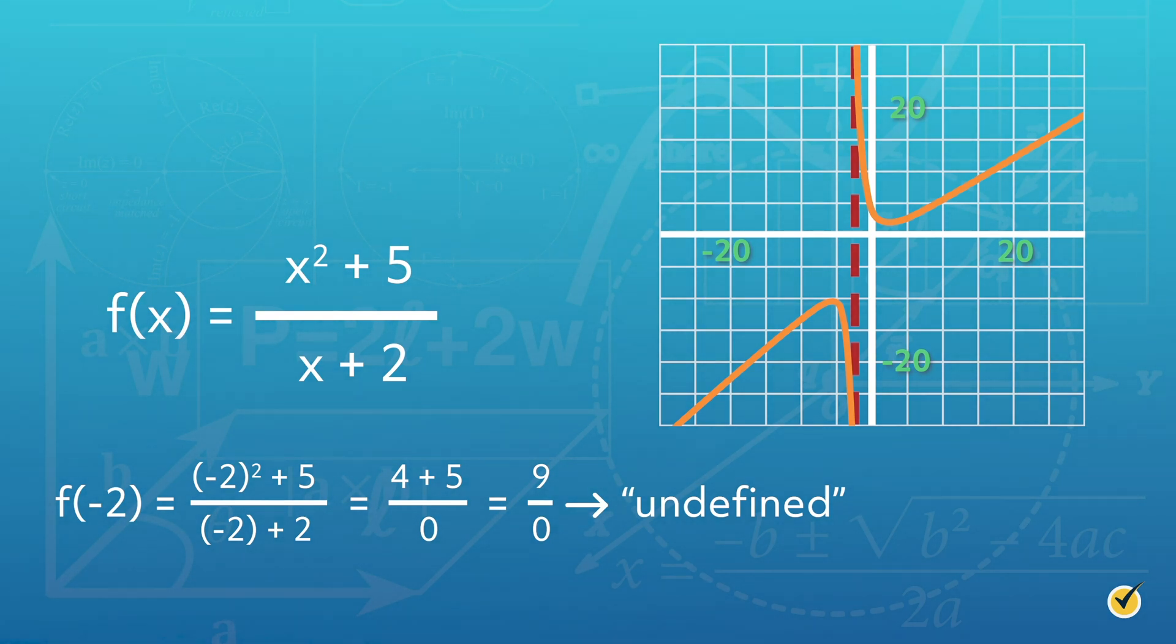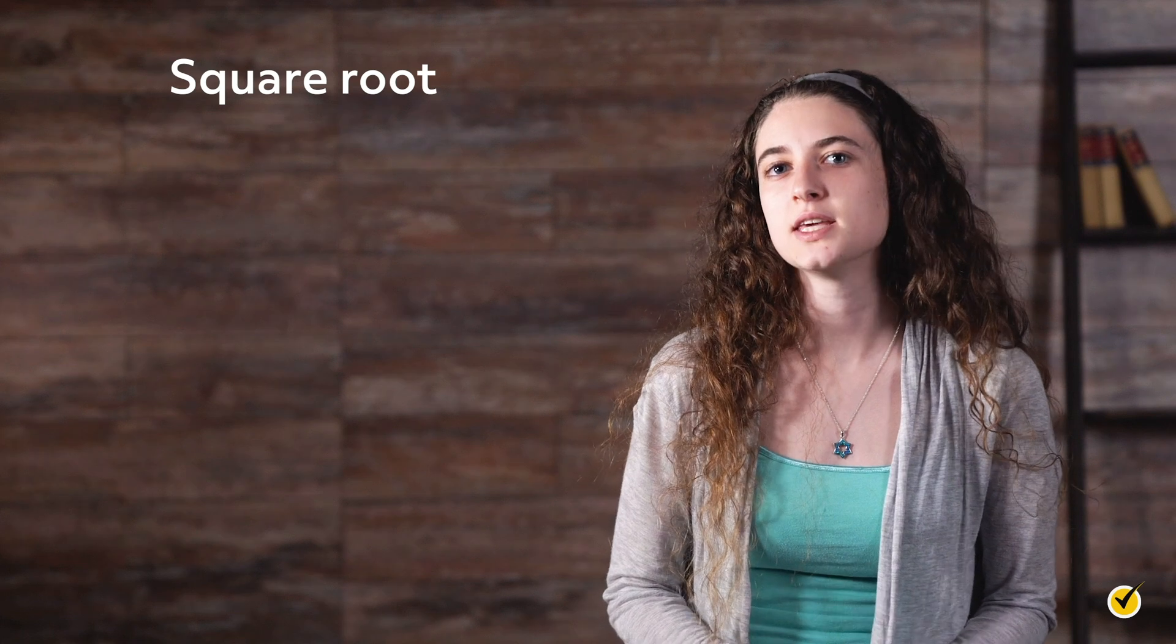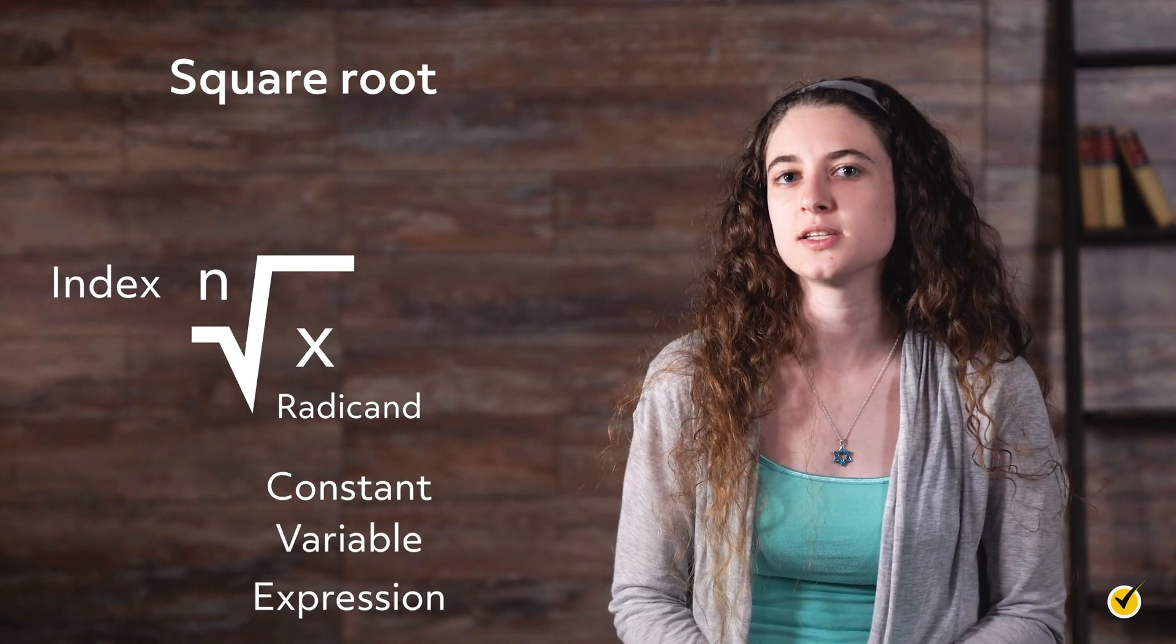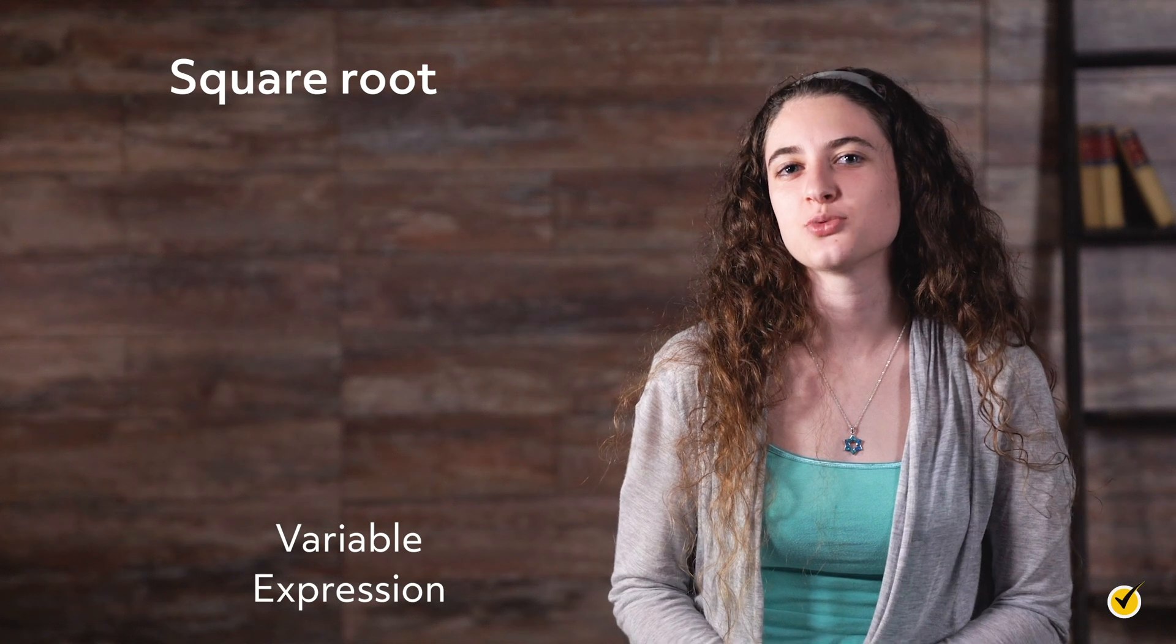The square root function is a specific type of radical function. The image provides the important parts of a radical expression. The index is the value indicated as n in the radical symbol. The radicand, in this case x, can be a constant, variable, or expression that is under the radical symbol. The parent square root function is written as f of x equals the square root of x. As you can see, there is no index notated in the square root function. When there is no index, you should assume that the n equals 2, and you will determine the square root of the radicand.